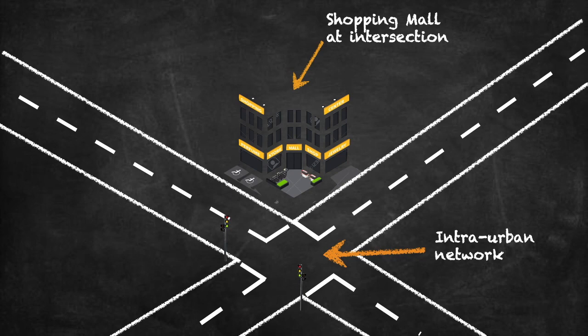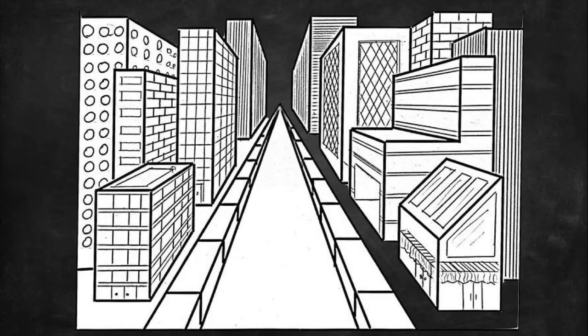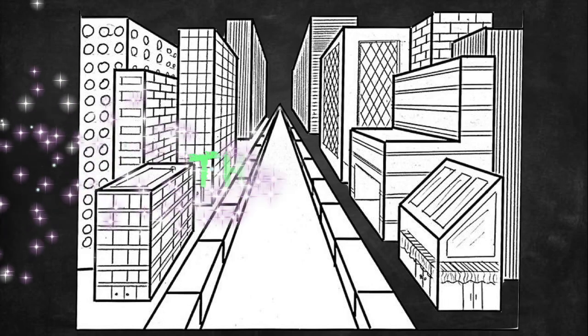The bid-rent curve shows us why we get high-rise buildings in cities, why there is maximum land use in the CBD because everybody wants to be there, and then as you move further away from the city, the profile drops and land spaces become bigger. The bid-rent curve explains why we get different land use zones within the city.